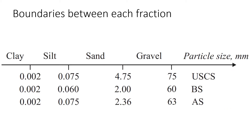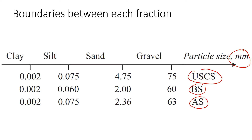The first thing we need to do is determine the boundaries between each fraction. These boundaries are given in a chart in terms of particle size in millimeters. There are three different systems we can use: the Unified Soil Classification System, the British system, and the Australian system. For this example, we're going to use Australian standards.